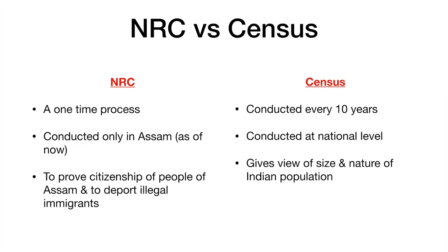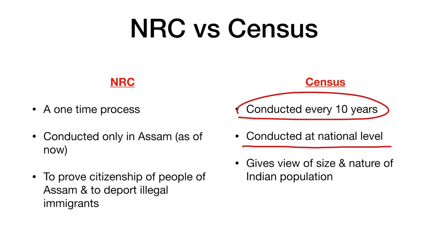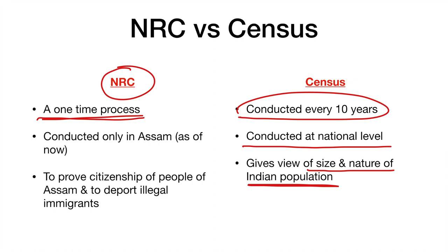That is all about the background of NRC. Now, people might be confused between NRC and census, but there is a lot of difference between the two. The census is conducted every 10 years at a national level, and its main motive is to give a view of the size and nature of the Indian population. NRC, on the other hand, is a one-time process to prepare a list of who the citizens are and who is not. It is conducted only in Assam, and its main objective is to prove citizenship of people in Assam and to deport illegal immigrants.